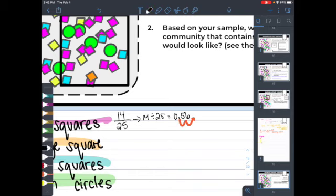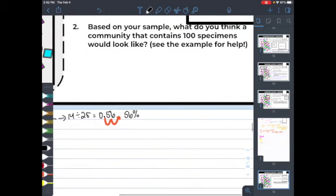And as we learned in this situation, that means that in our total of 100, 56 will be pink squares.